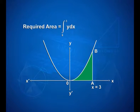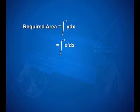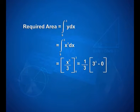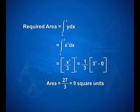Therefore, required area is equal to integral 0 to 3 of y dx, that is equal to integral 0 to 3 of x square dx. On integrating, we have x cube upon 3 with limits 0 and 3. On applying limits, we have 1/3 into (3 to the power 3 minus 0), that gives us 27/3 is equal to 9 square units as area.